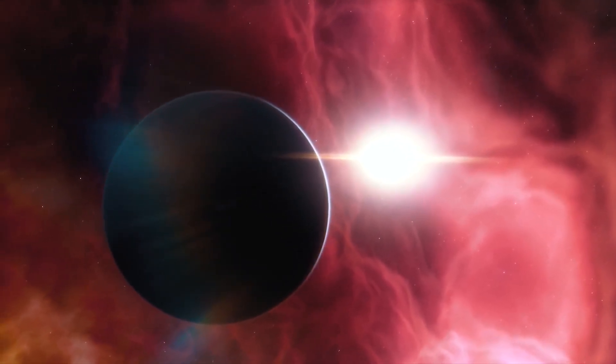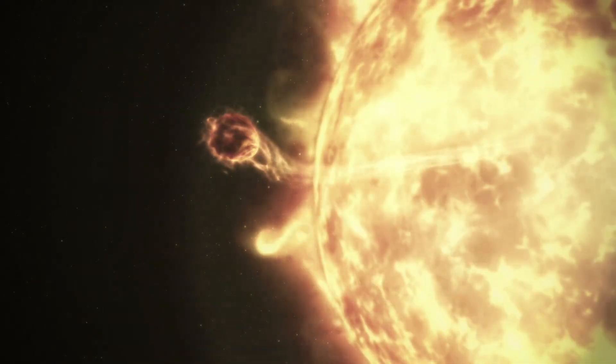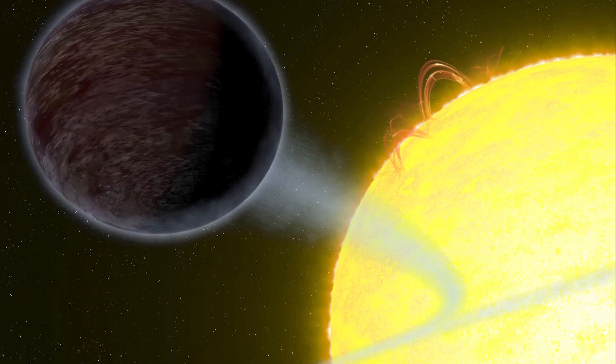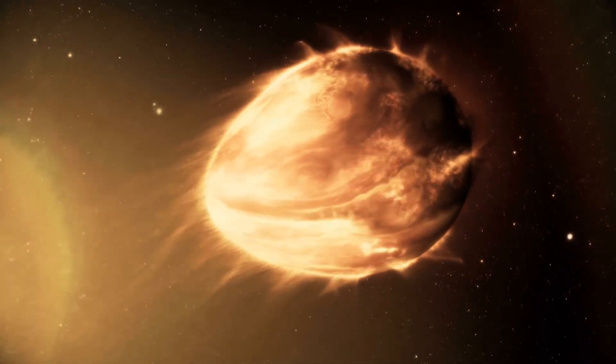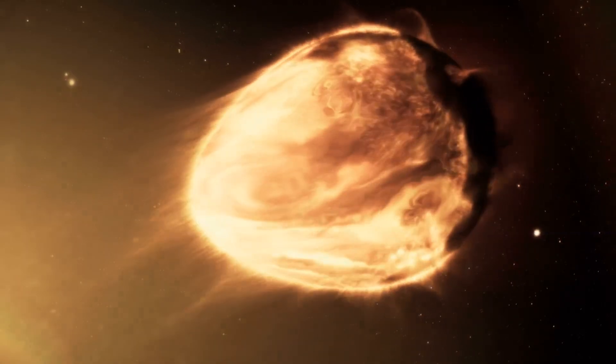As a red giant star, it will devour Mercury and Venus and will absorb our Earth. Actually, at the time of the beginning of the merge, the surface of the Earth will be too hot to support life as the sun's luminosity will have increased by 40%. No water will be found on Earth at this time.